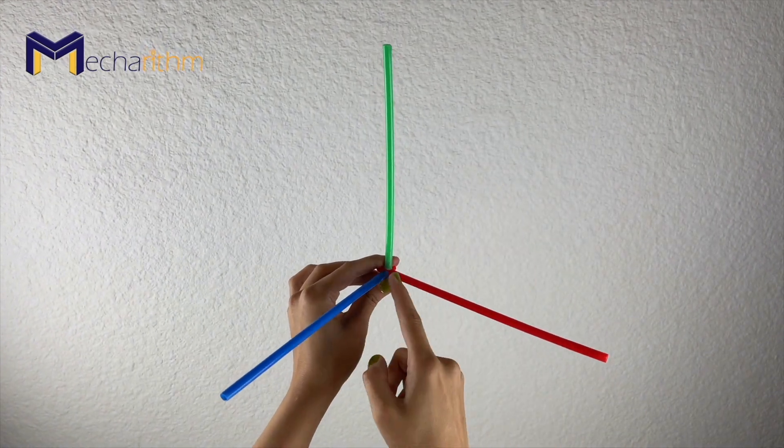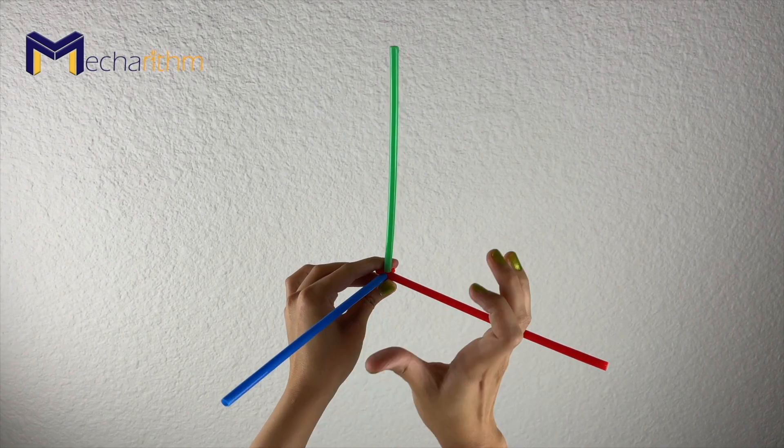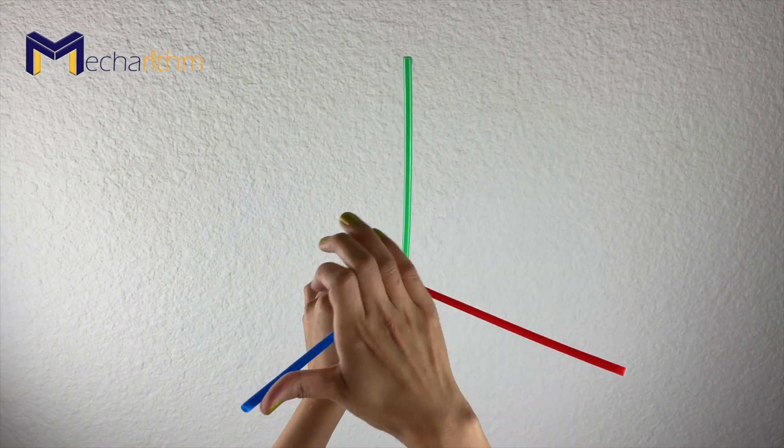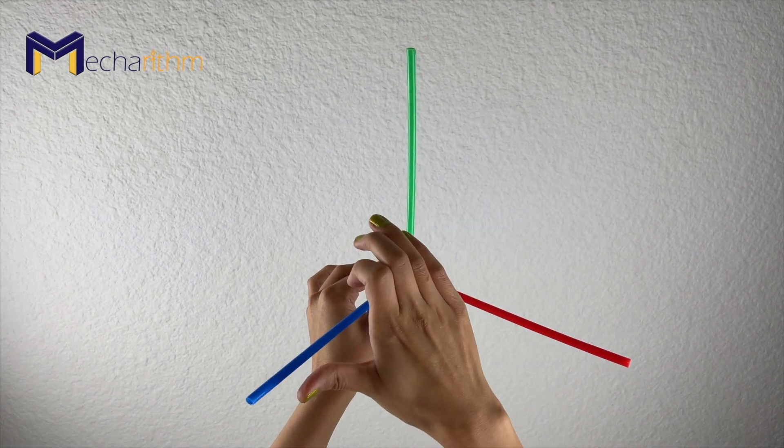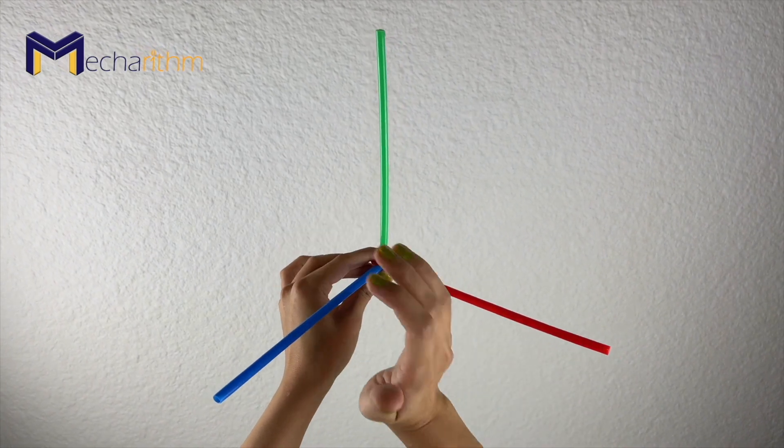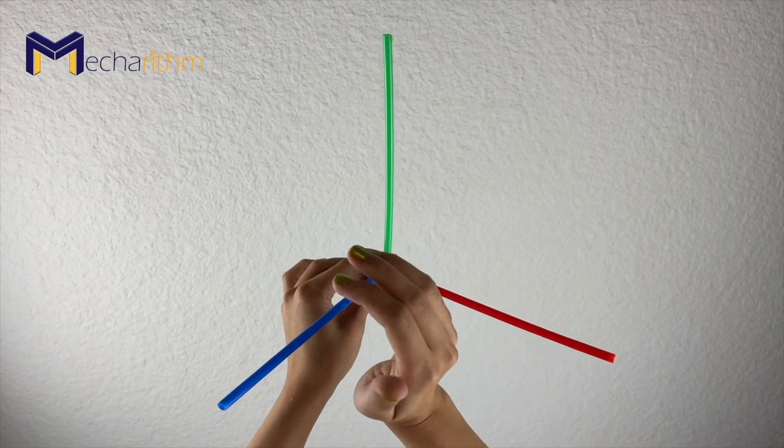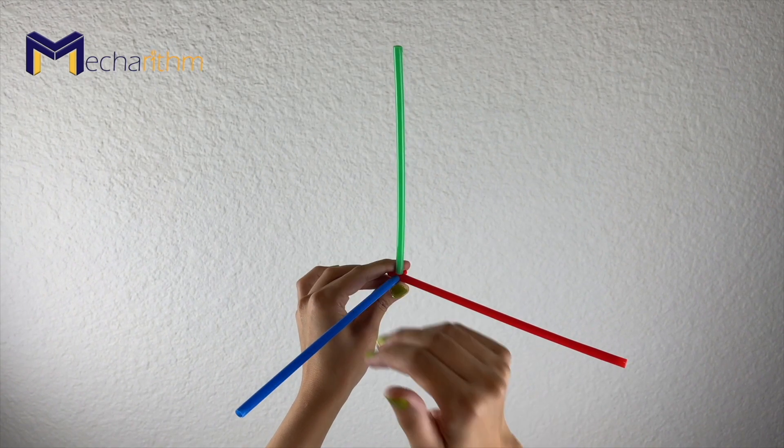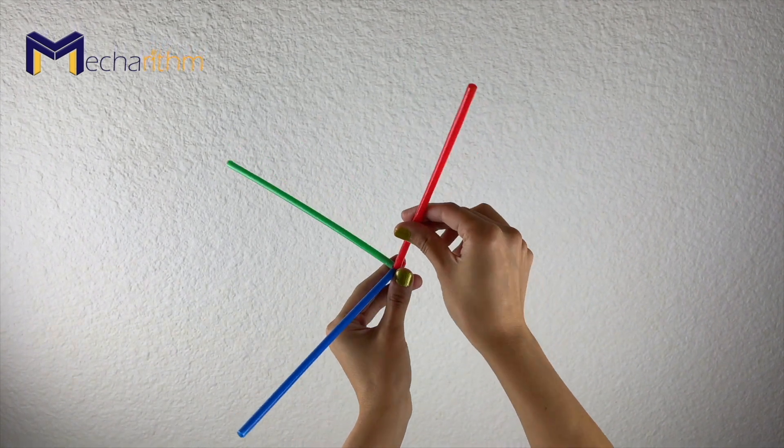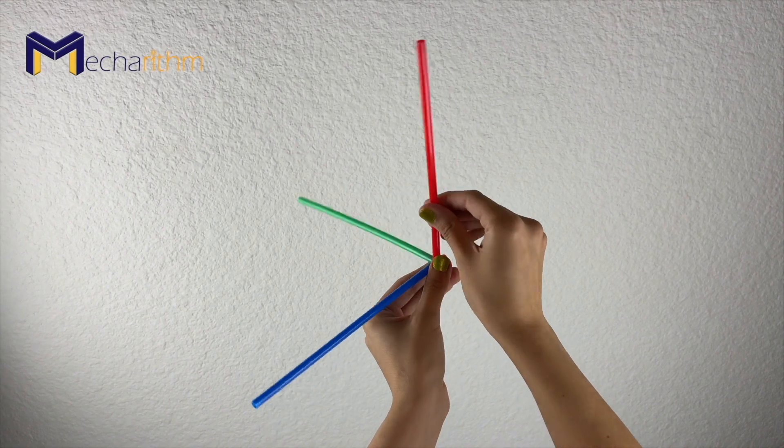So if this is the x direction, the positive rotation around the x direction would be when my thumb is in the direction of the axis, the curling fingers show the positive rotation. So this would be the positive rotation around this x-axis.